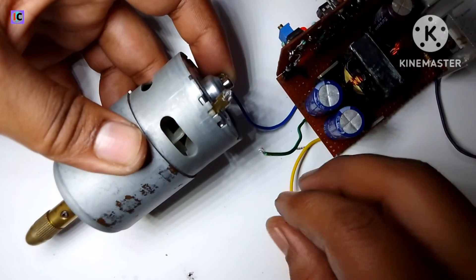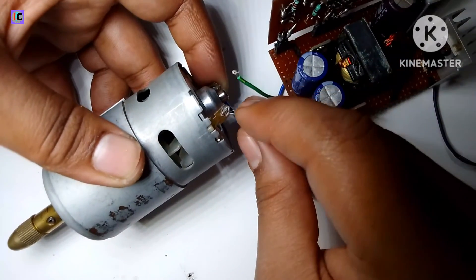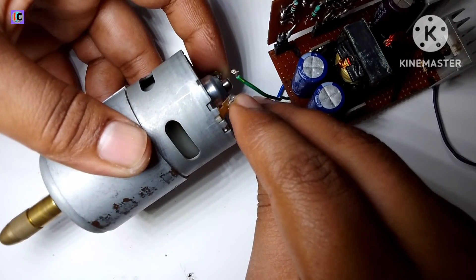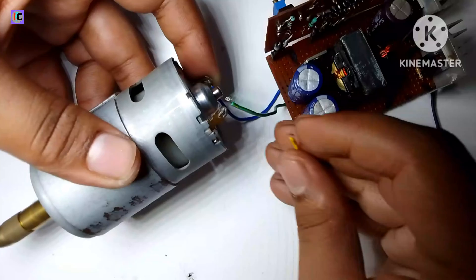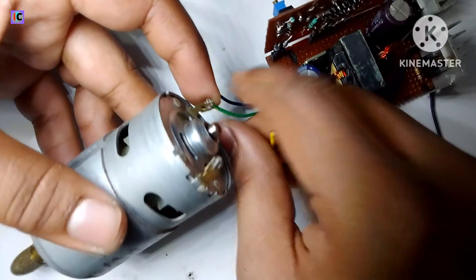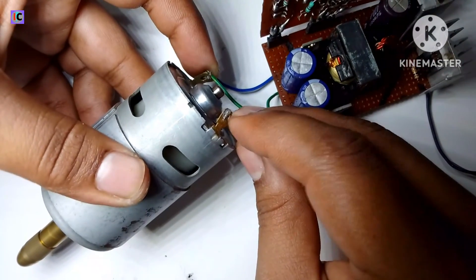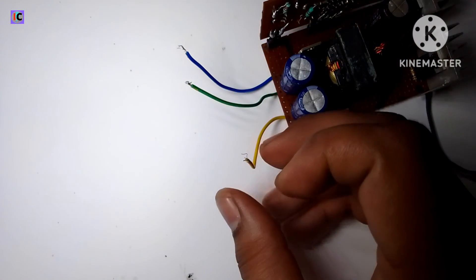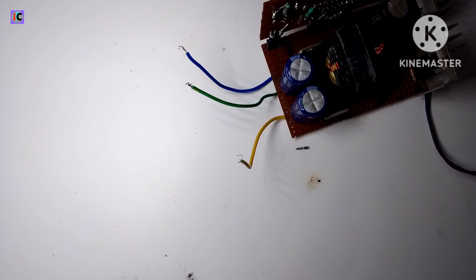The output of the power converter is very high in amperes. The circuit diagram of this converter is given in the description, and also the PWM controller module is given in the description. Thanks for watching, and I will see you in the next video.